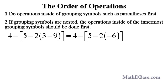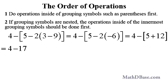Multiply negative 2 by negative 6 to get positive 12, then add the 5 and 12 to get 17. But since there is a negative sign outside of the square bracket, it is actually negative 17. Adding 4 and negative 17, we get negative 13.